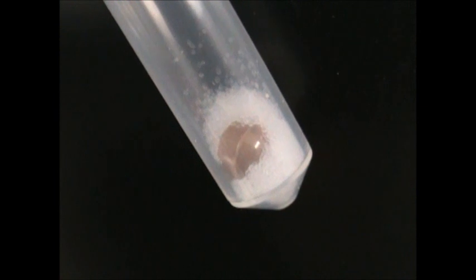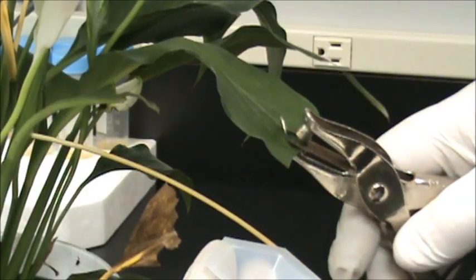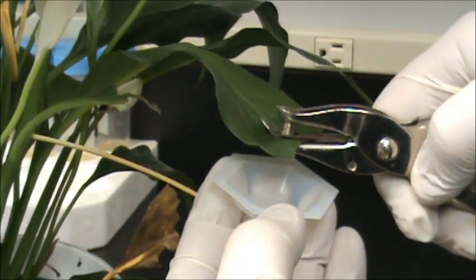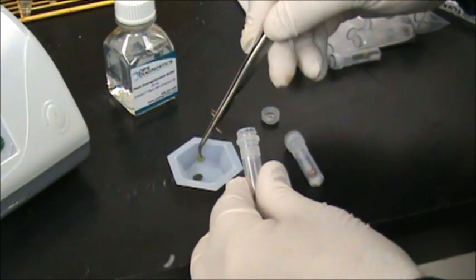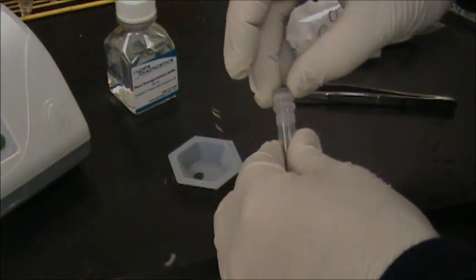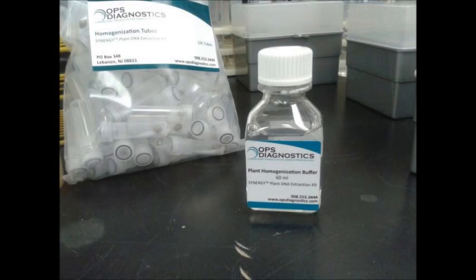First, it starts with a Synergy disruption tube, which has a gel and a grinding satellite. And in this tube, you place a sample of your plant, in this case a leaf punch. And also, a homogenization buffer from the Synergy kit is added, in this case 500 microliters.